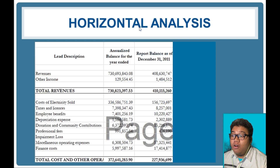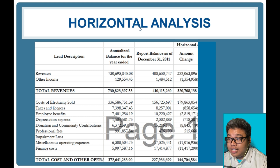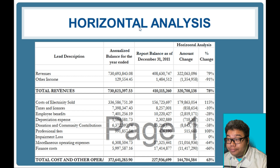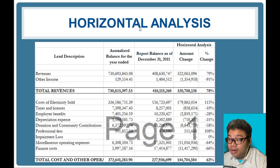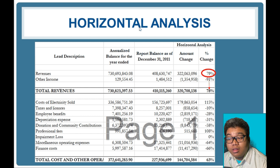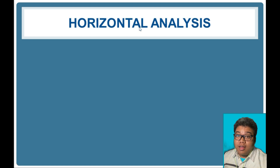In the statement of comprehensive income, we see revenues increased from 410 million to 730 million — a 320 million increase in sales. This is a good indication that the statement of financial position presented earlier is consistent with the income statement, confirming that revenues have caused the change in total revenues.